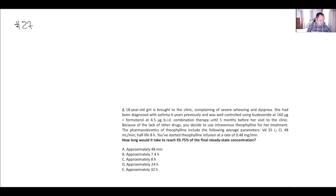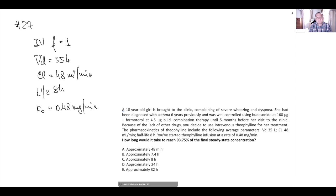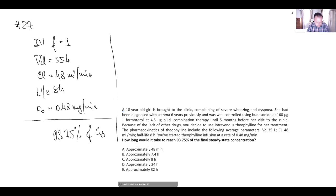Now let's talk about steady state. Steady state is highly related to half-lives, because half-lives actually represent the time to reach a steady state concentration. Let's do this question: we have IV administration, bioavailability one, volume of distribution 35 liters, clearance 48 milliliters per minute, half-life 8 hours. If IV infusion is started at rate k0, how long will it take to reach 93.75% of the final steady state concentration? This corresponds to four half-lives.